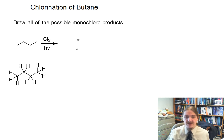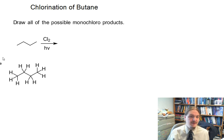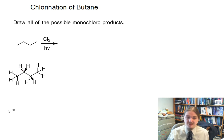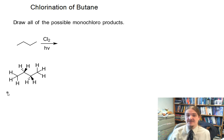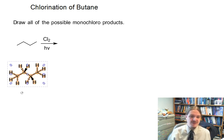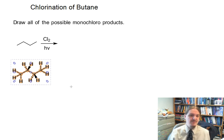Here are all the hydrogen atoms on butane. So we have primary, secondary, secondary, primary. I'm going to put the secondary hydrogens on the appropriate kind of wedges — not that these things are chirality centers — but some of them are coming towards us and some of them are going away from us, and that's actually going to be important later on.